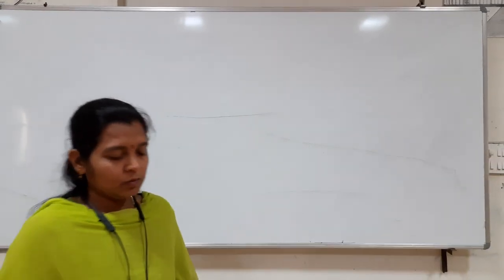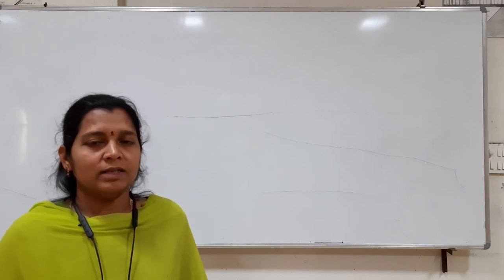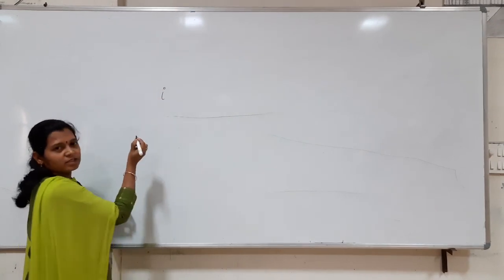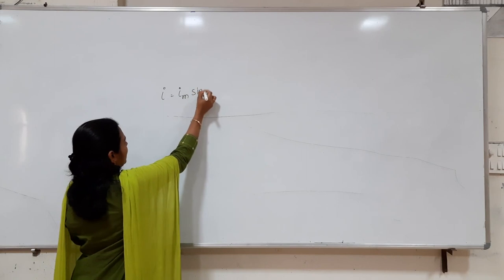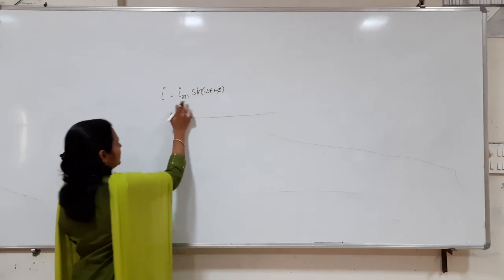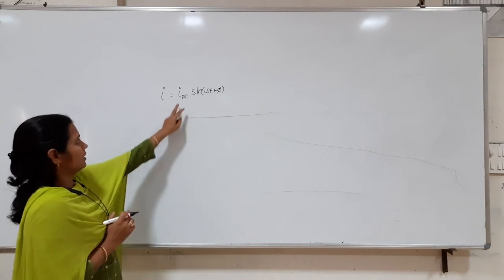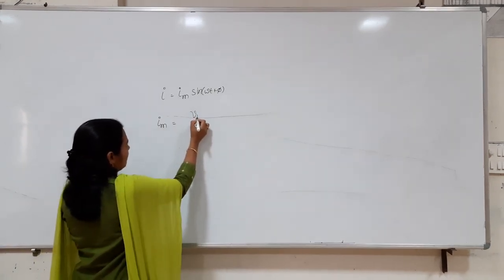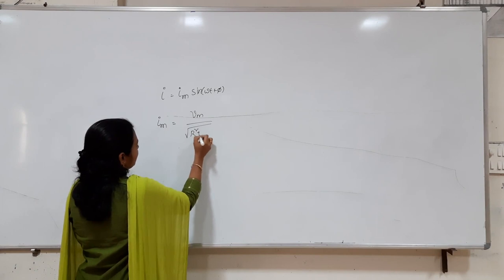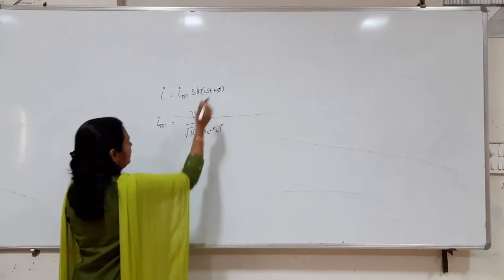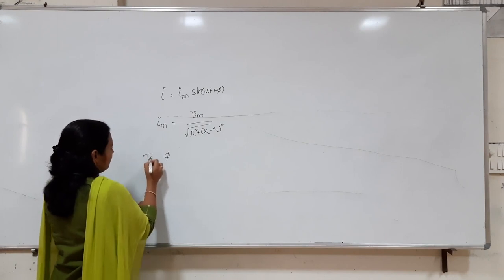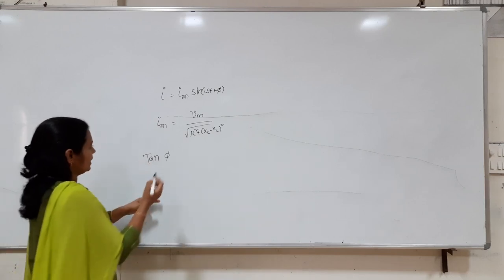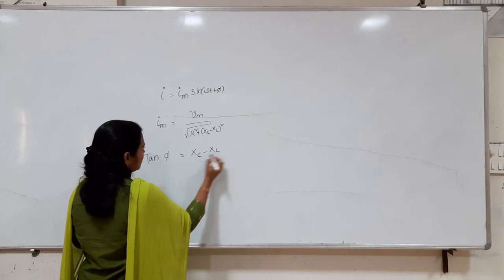Hello everyone. In the last class we discussed about the series LCR circuit, in which we calculated the instantaneous current as Im sin(ωt + φ). We derived the amplitude of the oscillating current Im = Vm / √(R² + (Xc - XL)²), and also derived the expression for φ, the phase difference between the applied AC voltage and current, where tan φ = (Xc - XL) / R.